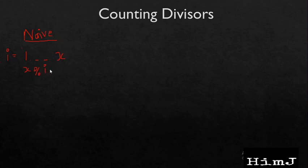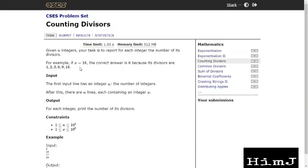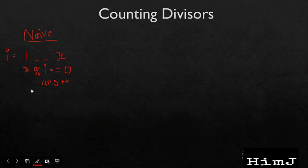If x is divisible by i we will simply increment the answer. Now since we have to do this for n integers, the total time complexity will be O(n*x).